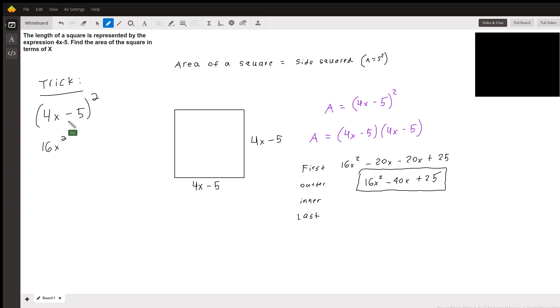and then double it to get negative 40x. And then negative 5 squared is 25, square the last term to get 25. You see we get the same answer, just a little shortcut.